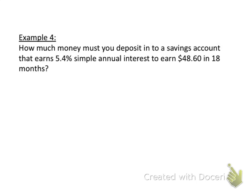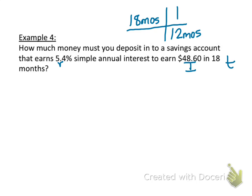In this example, it wants to know how much money we deposit in a savings account that earns 5.4% simple interest to earn $48.60 in 18 months. I'm given my rate, I'm given my interest — $48.60 earned — and I'm given my time. The one that's missing is the principal. I need to convert 18 months into years: divide 18 by 12 and I get 1.5. It's a year and a half, so 1.5 years.